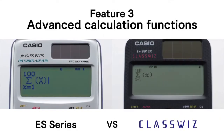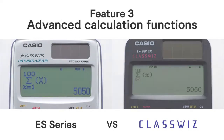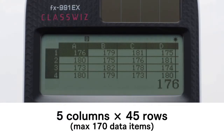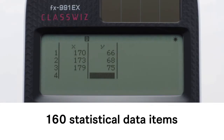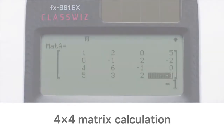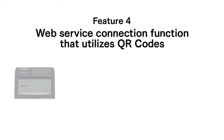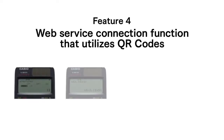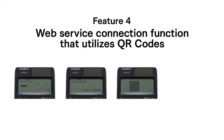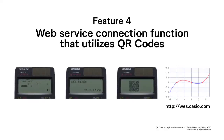A high-performance processor and twice the memory of previous models ensure speedy operation and superior computational power. The ClassWiz also has a web service connection function that utilizes QR codes.